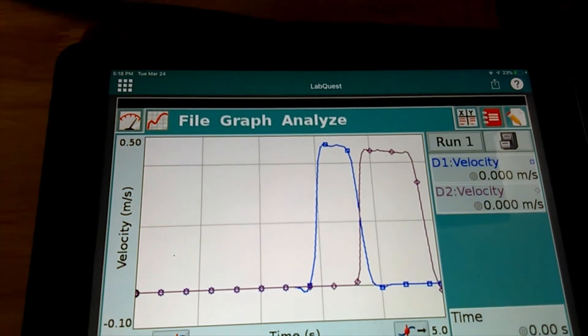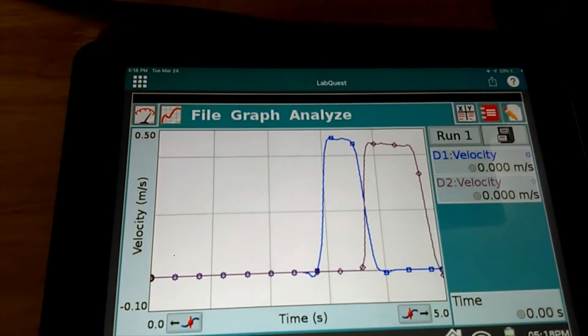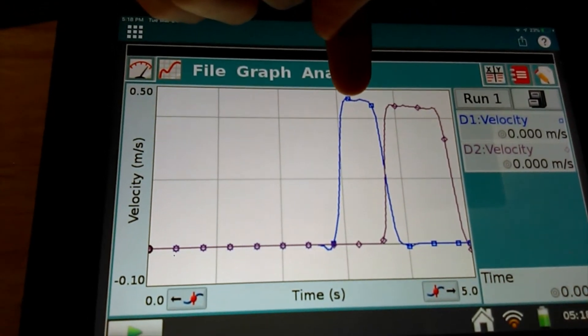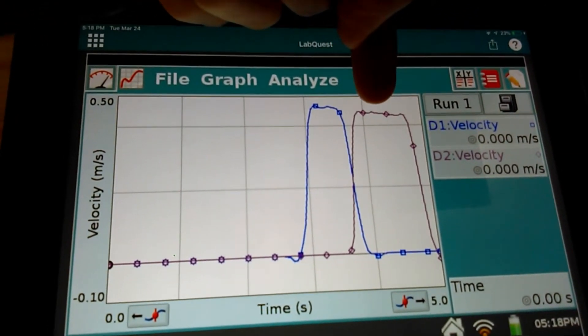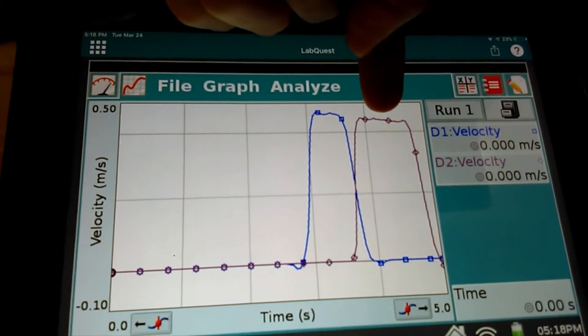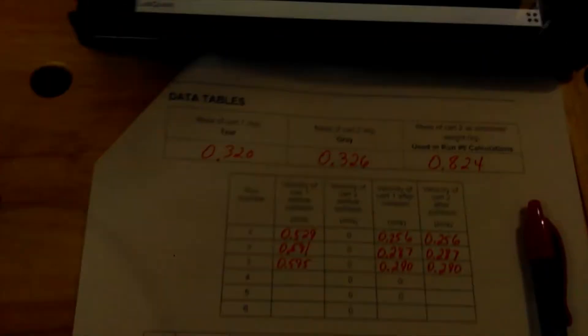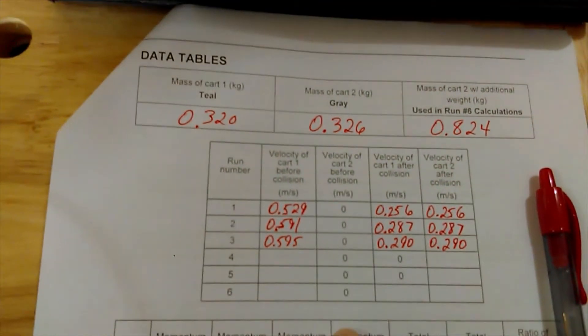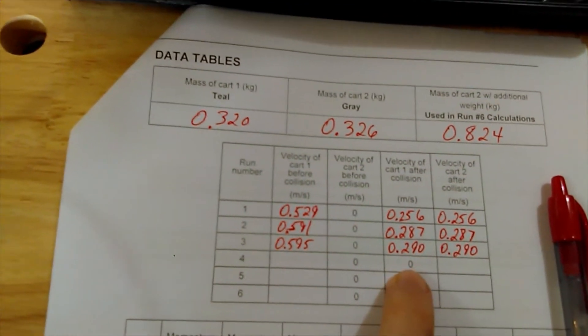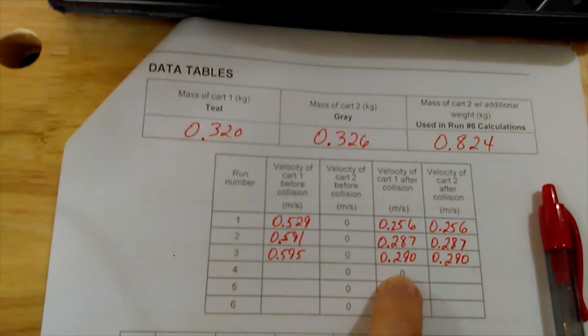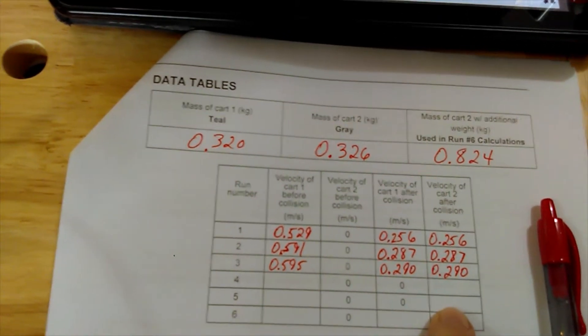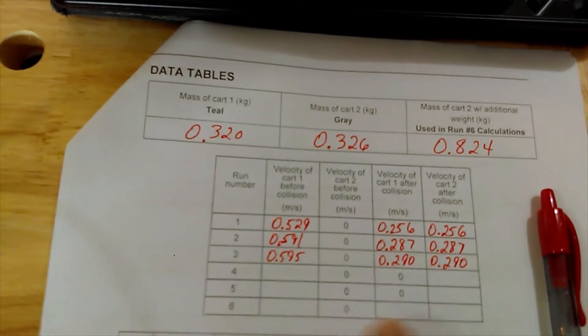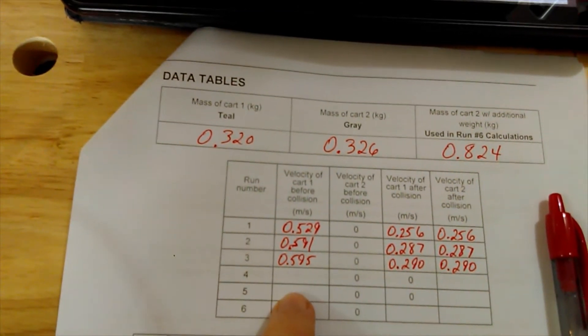We get a graph that looks like this. The blue line is tracking car one, the purple line is tracking car two. We need to analyze them the same way to find the velocity of car one before collision at this first plateau, and the velocity of car two after collision at this plateau. Notice on the table, car two is always stationary before collision, but now after collision, car one comes to rest. For runs four and five, I need to find these two values.